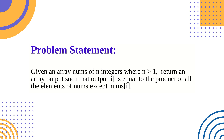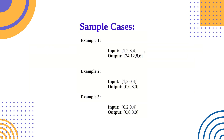Let me explain with sample cases. Suppose our input array is [1, 2, 3, 4], then the output should be [24, 12, 8, 6]. For index 0, the product is 2×3×4 = 24. For index 1, the product is 1×3×4 = 12. For index 2, the product is 1×2×4 = 8. For index 3 (i=3), the product is 1×2×3 = 6.